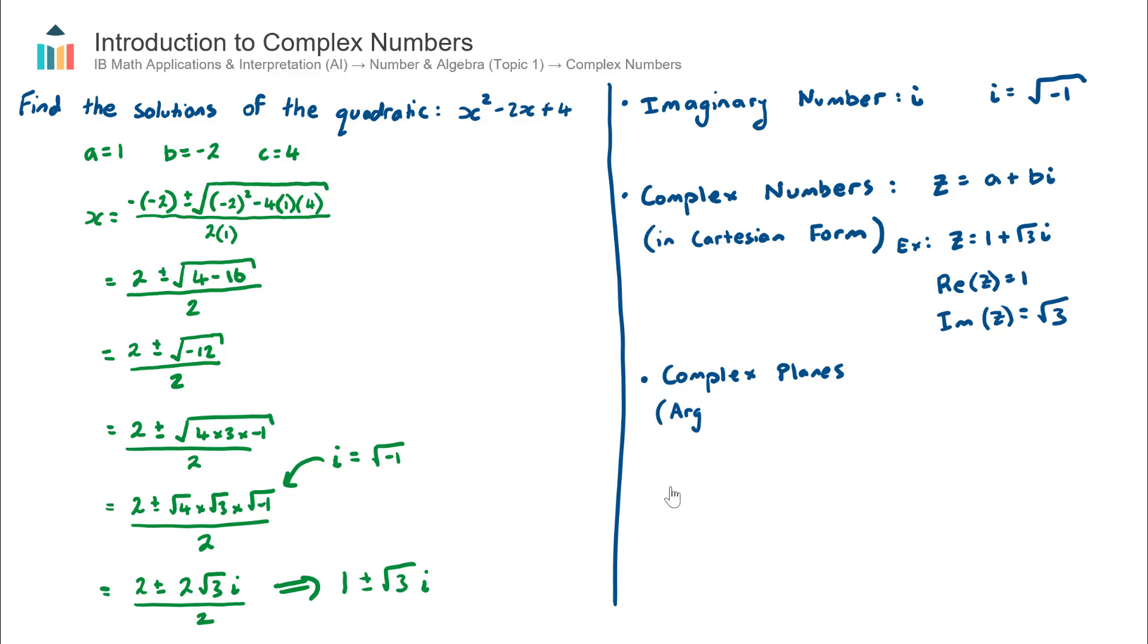But the IB documentation actually refers to them as complex planes. Argand diagrams... but they are the same things.